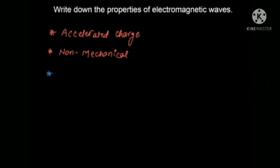Electromagnetic waves are transverse in nature. This means that the magnetic field vector and the electric field vector are perpendicular to each other, and they are also perpendicular to the direction of wave propagation.